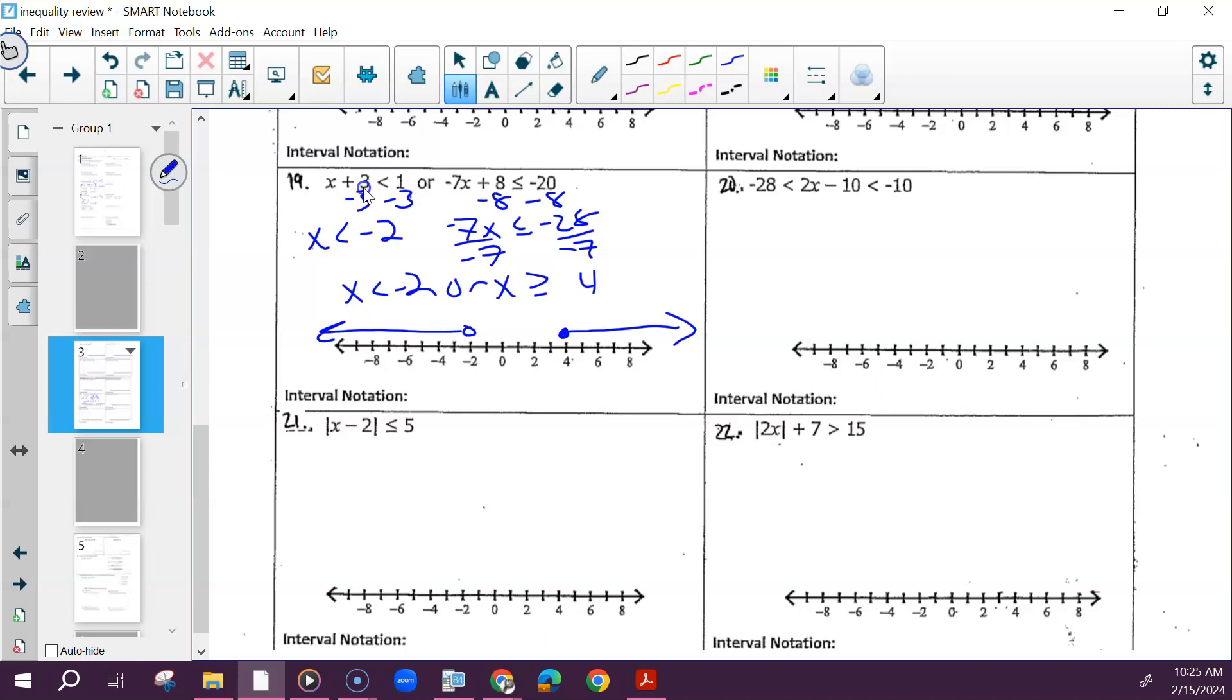Then your interval notation, you're doing the whole thing. So from start to finish, starts at negative infinity, ends at negative 2. It's open. Or start at 4, bracket, ends at infinity.